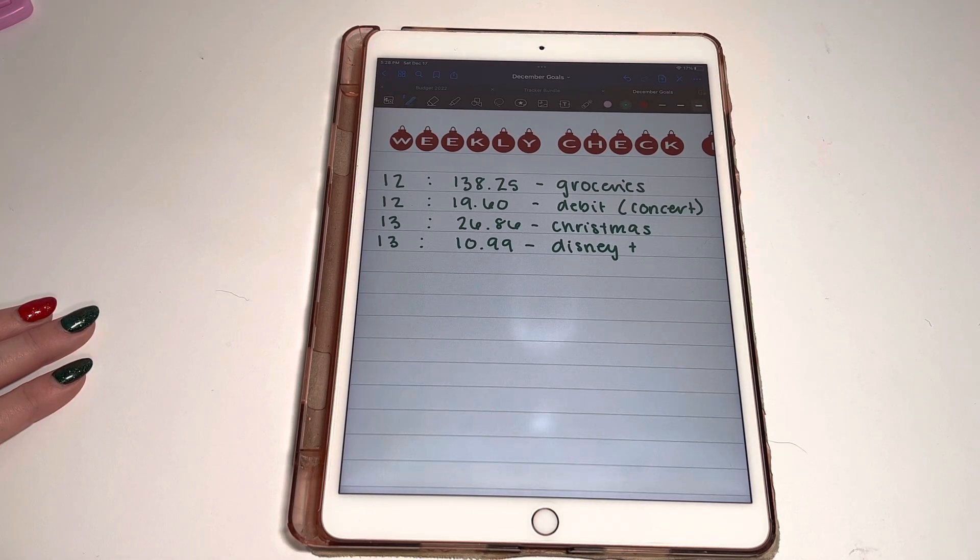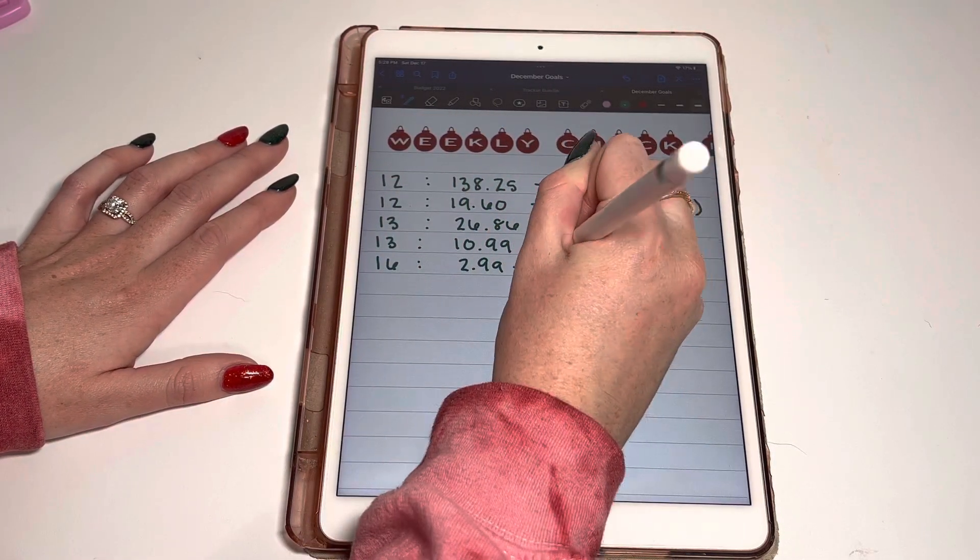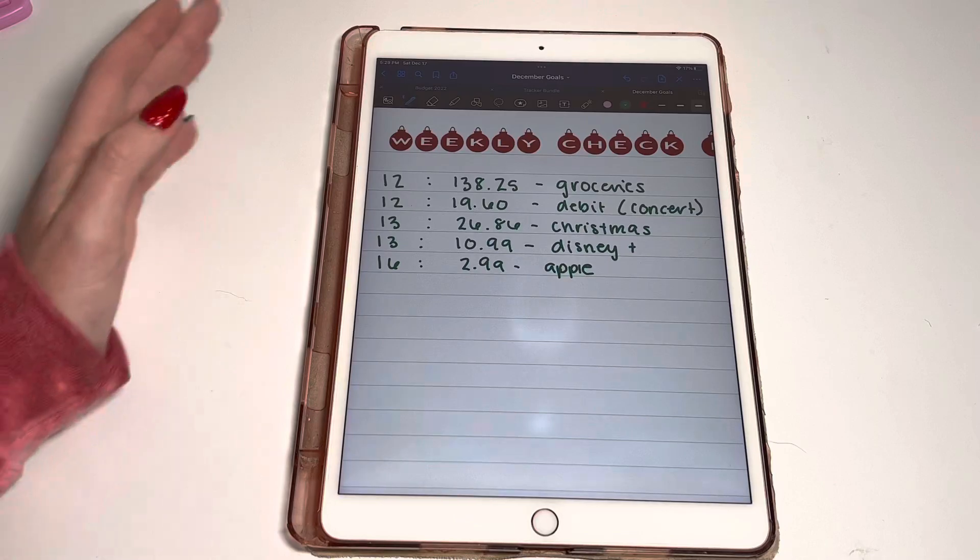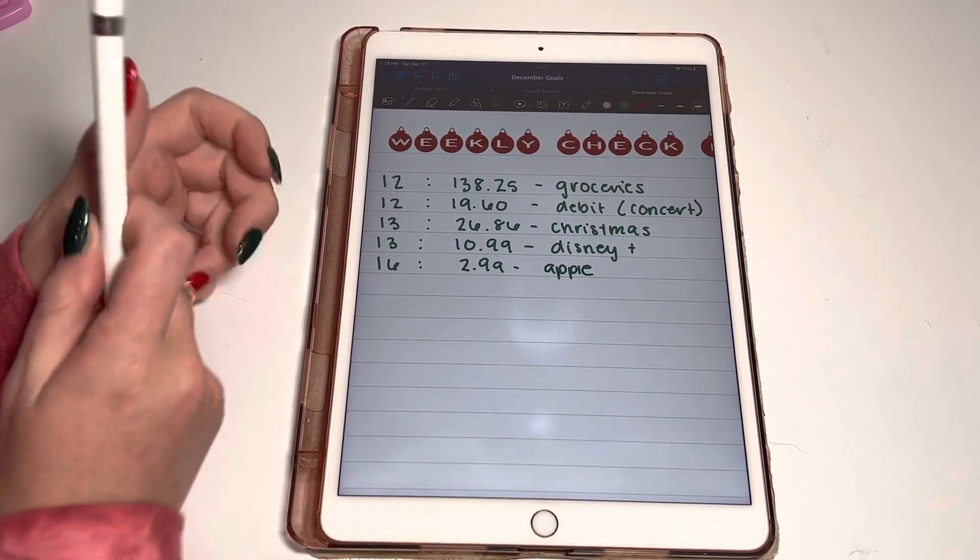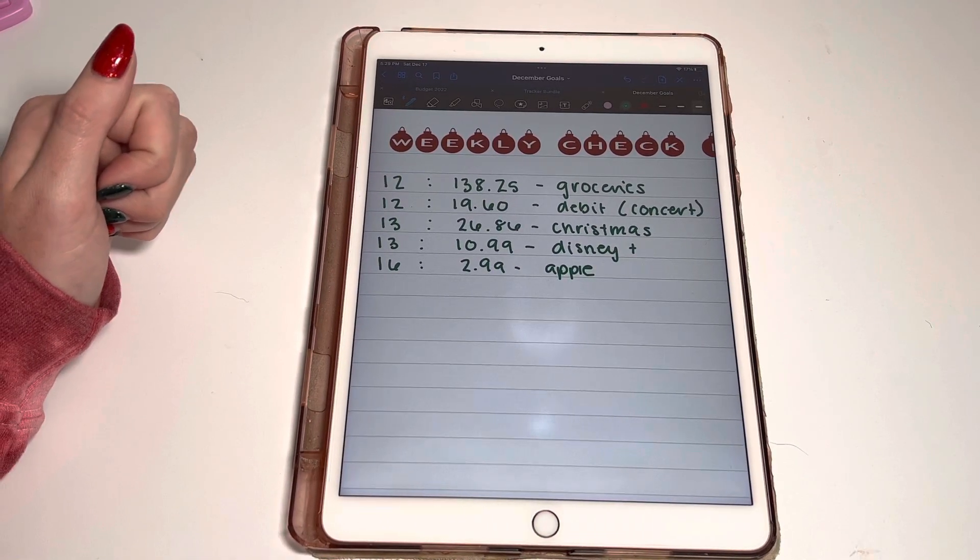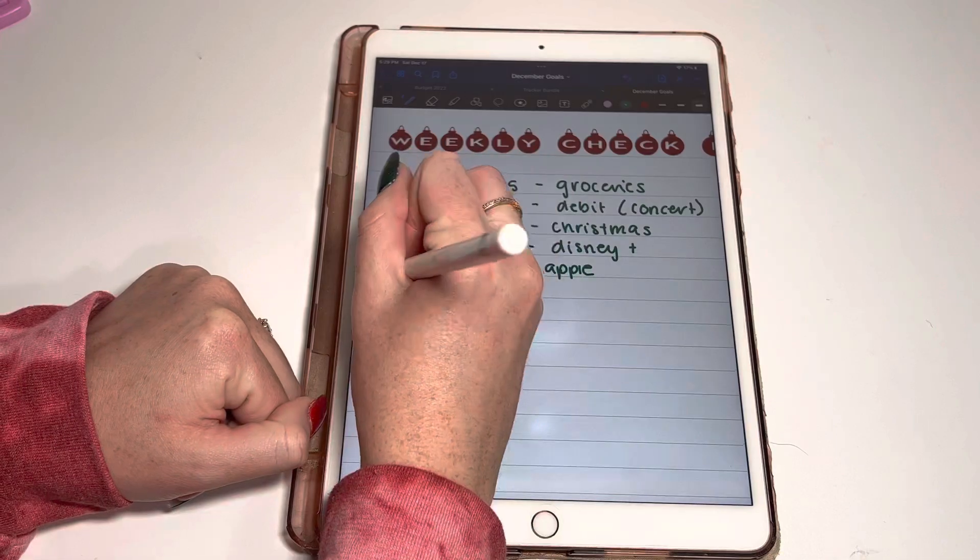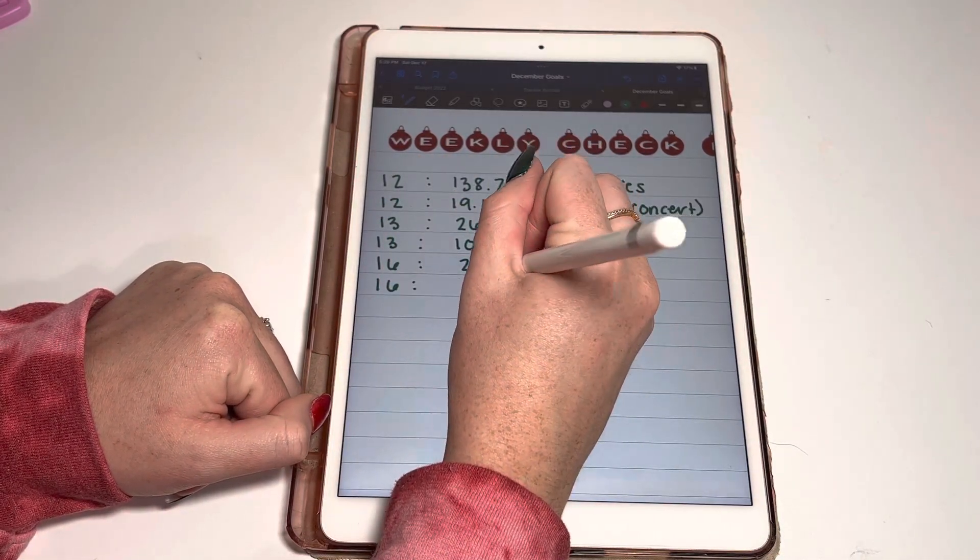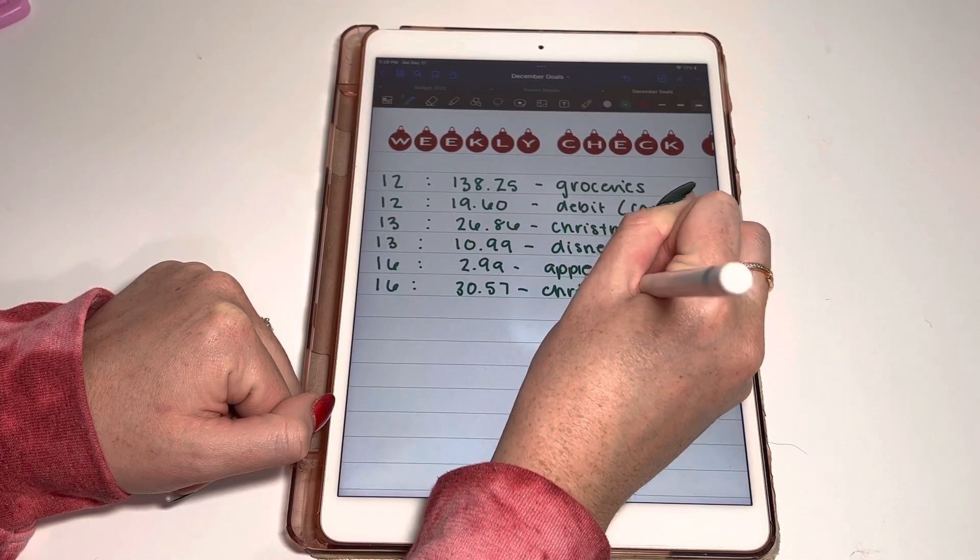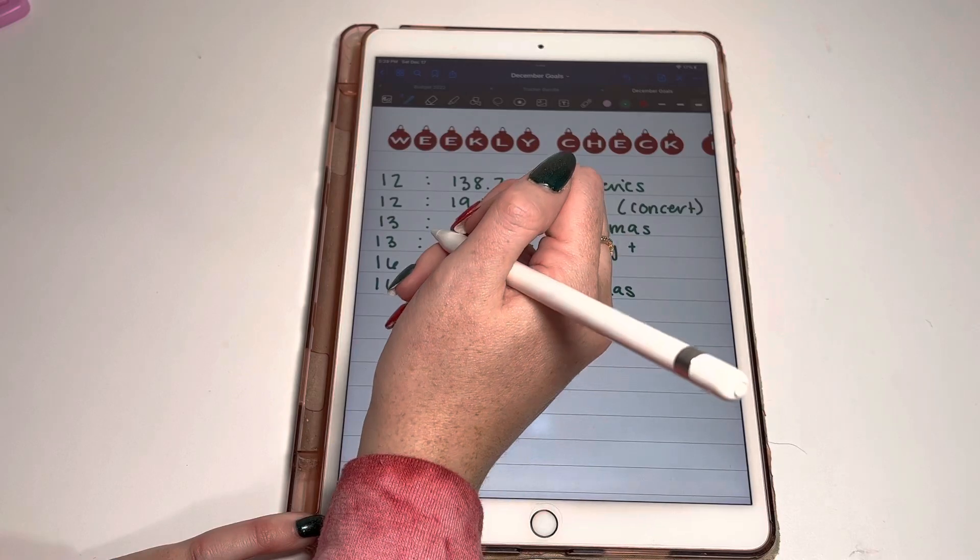On the 16th, $2.99 came out for Apple. That is my extra cloud storage. So $3 a month, not bad. I really need to look to see if I'm actually using that storage or if I could cancel that. But that's for another time. And then we have $30.57 that I spent on Christmas. We went Christmas shopping yesterday and got pretty much everybody done, besides those couple people.